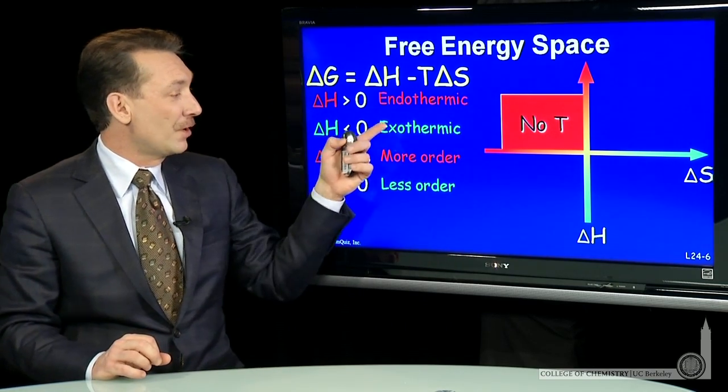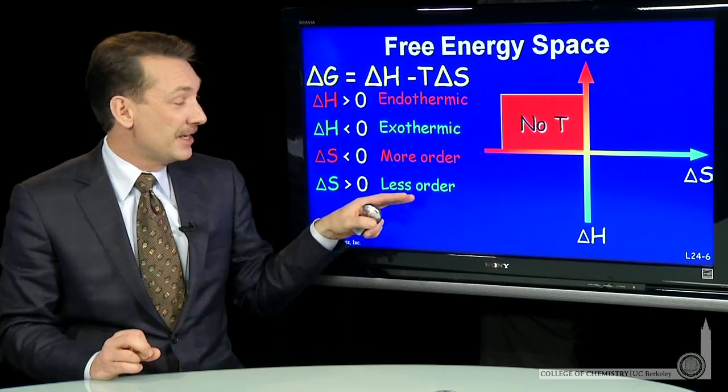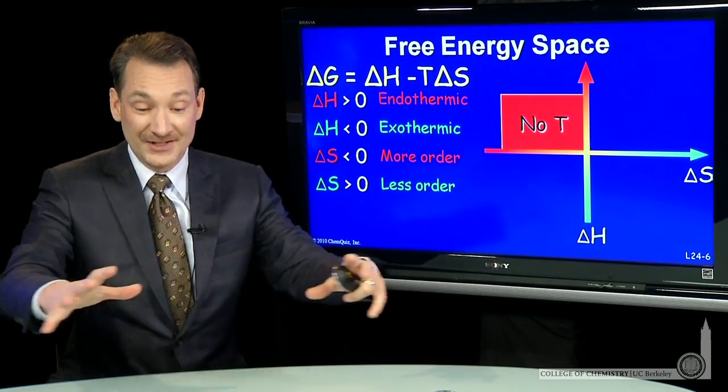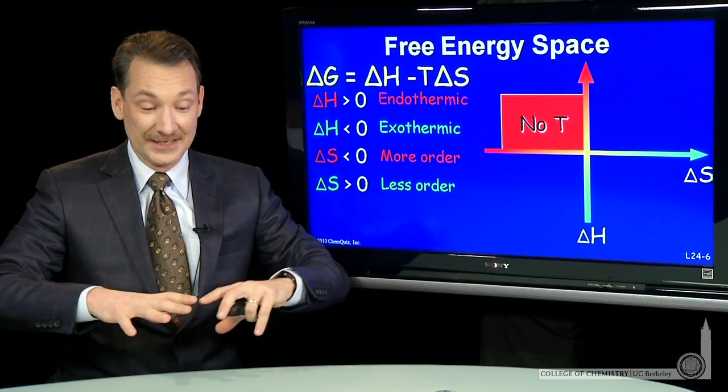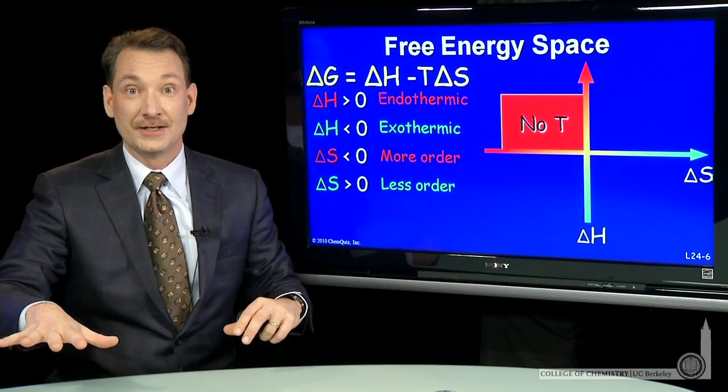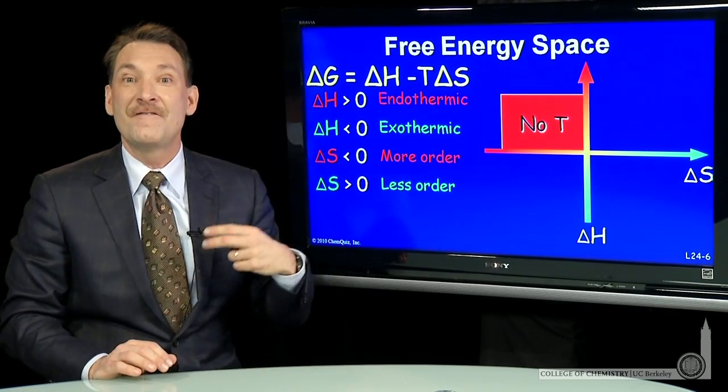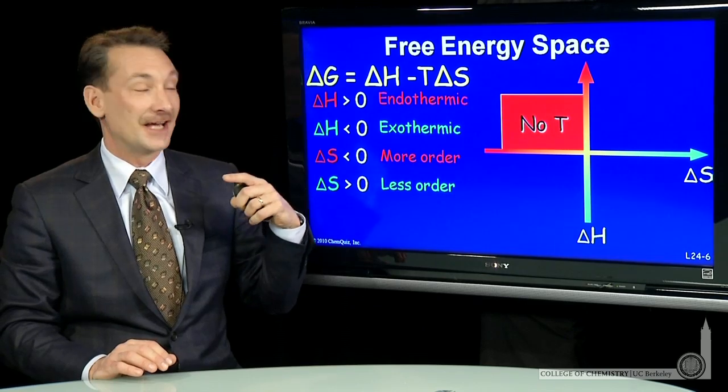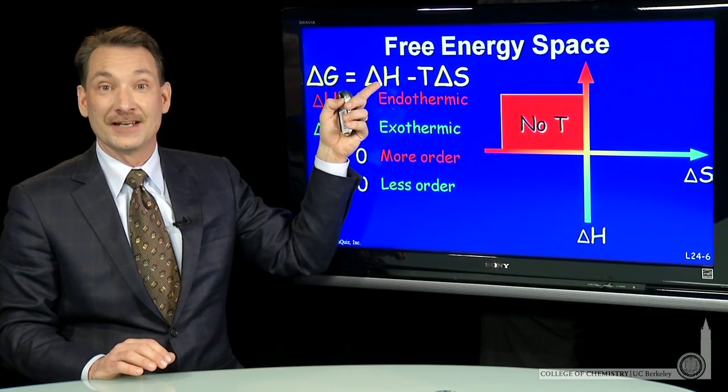Let's look at a couple other conditions. What if it's exothermic and goes to a less orderly state? That is, more microstates. The energy is more dispersed. Both of these favor delta G being negative. Of course, exothermic means delta H is negative.